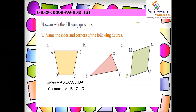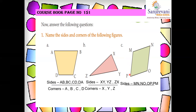For the triangle figure, the sides would be XZ, ZY, and XY. And the corners would be X, Y, and Z. For the next figure, the sides are MN, NO, OP, and MP. The corners would be M, N, O, and P.